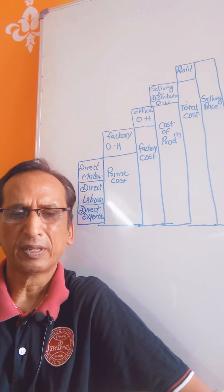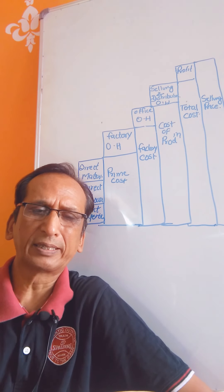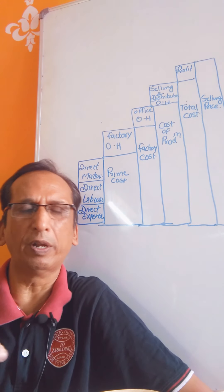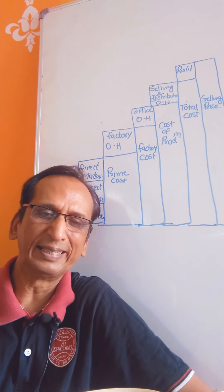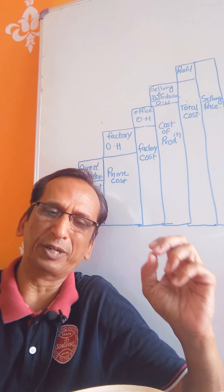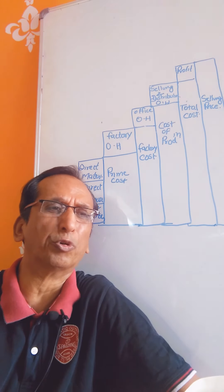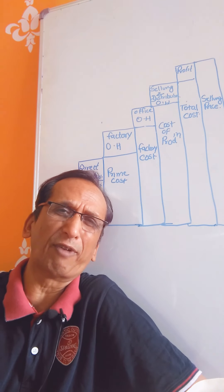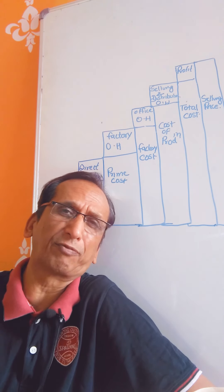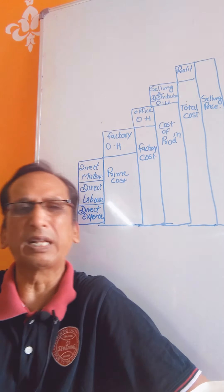As we have seen, a manager requires different records, and one of the important records is the cost record. Cost records provide cost data to managers. We have already seen that cost is divided into two parts: first, classified on the basis of behaviour of the cost, and second, on the element of the cost. Behaviour is divided into fixed cost and variable cost.